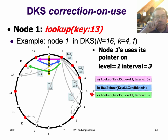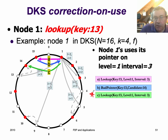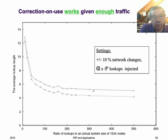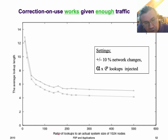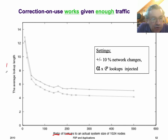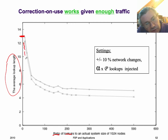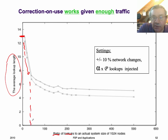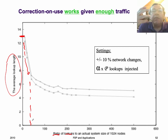When a node sends a message to another node and that node knows there's a mistake, it sends a message back to correct things. This works well. Looking at measurements for a system of 1024 nodes, the average lookup length starts very high because of mistakes, but as the system is used more, it goes down. After a certain number of steps, all the mistakes are corrected. The routing table dynamically follows changes in the network structure efficiently.